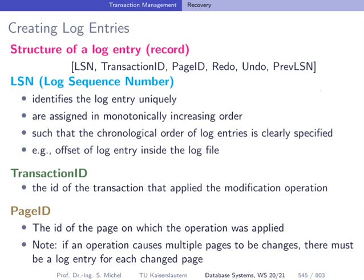Let's see more concretely how these log entries look. We have already seen that first of all you have the transaction ID, describing the transaction which caused this log entry, where you're recording a modification to a page with this ID. This is the operation you wanted to execute and here's how you undo it. You can have physical images or logical entries. Here we have a log sequence number, given in monotonically increasing order, and a pointer called previous LSN.